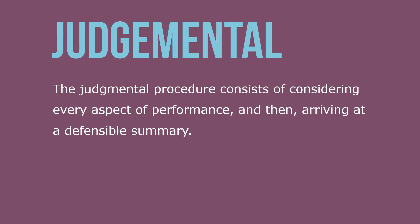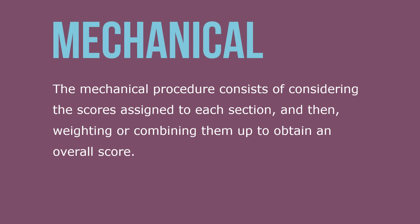Two main strategies are used to obtain an overall performance score for each employee: judgmental and mechanical. The judgmental procedure consists of considering each aspect of performance and then arriving at a defensible summary. The holistic approach relies on the ability of the rater to arrive at a fair, accurate overall score. The mechanical procedure consists of condensing scores assigned to each section and then weighting them or combining them to obtain an overall score.